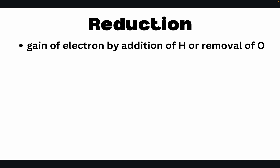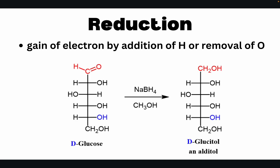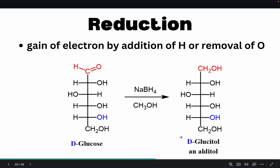The next reaction is reduction — the gaining of electrons, either by adding hydrogen or removing oxygen. Using sodium borohydride as the reducing agent, it donates hydrogen to the oxygen and to the carbon, breaking the double bond of the aldehyde group. The carbon receives another hydrogen to form CH2, and the oxygen receives a hydrogen to form OH, yielding an alcohol. The resulting product is D-glucitol, an alditol, also called sorbitol.